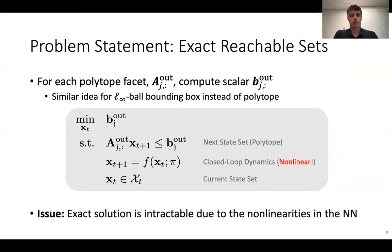When we think about reachable sets we can write it as an optimization problem where for each polytope facet A, we're going to compute some scalar B so that our next state lies within this polytope description. What we want to do is come up with the smallest scalar B so that our polytope is as tight as possible. If we solve this exactly we'd be subject to the constraints of following your nonlinear closed-loop dynamics. This optimization problem is intractable because of the nonlinearities in the neural network as well as the massive size of the neural network potentially if it's one of these deep neural networks. The same type of idea extends to L-infinity balls if you want to think about rectangles instead of polytopes which can scale better to higher dimensions.